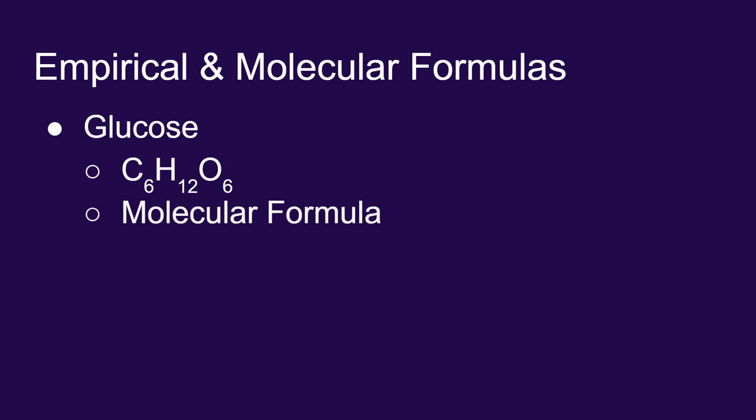That is the molecular formula. It shows you not only what elements are present in the molecule, but exactly how many. We know that a molecule of glucose contains six carbon atoms, 12 hydrogen atoms, and six oxygen atoms. We also know that a mole of glucose contains six moles of carbon, 12 moles of hydrogen, and six moles of oxygen.